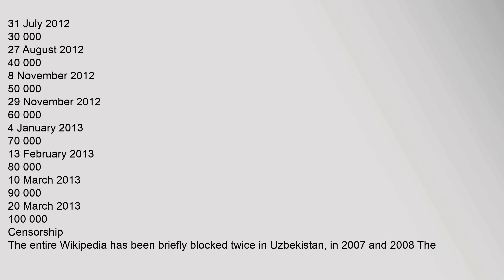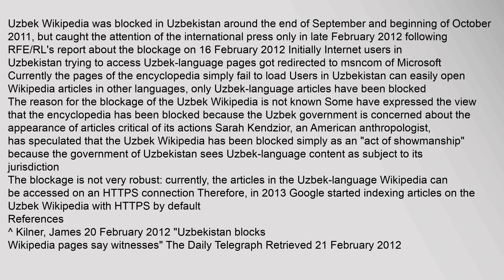The entire Wikipedia has been briefly blocked twice in Uzbekistan, in 2007 and 2008. The Uzbek Wikipedia was blocked around the end of September and beginning of October 2011, but caught the attention of the international press only in late February 2012, following RFE/RL's report about the blockage on 16 February 2012. Initially, Internet users in Uzbekistan trying to access Uzbek language pages got redirected to msn.com. Currently, the pages of the encyclopedia simply fail to load, while users can easily open Wikipedia articles in other languages — only Uzbek language articles have been blocked.